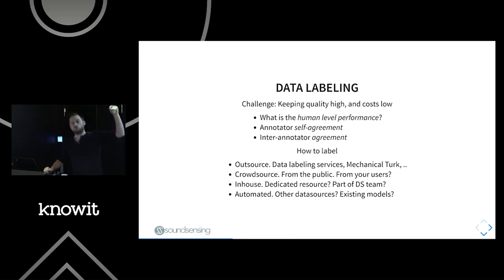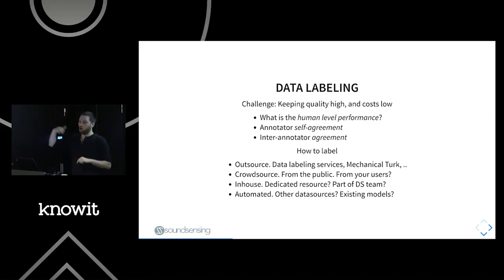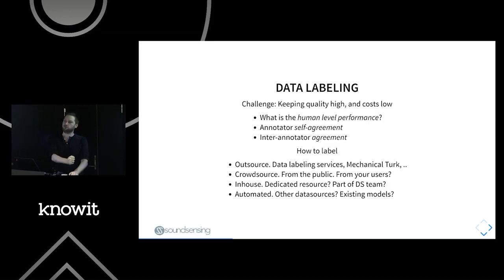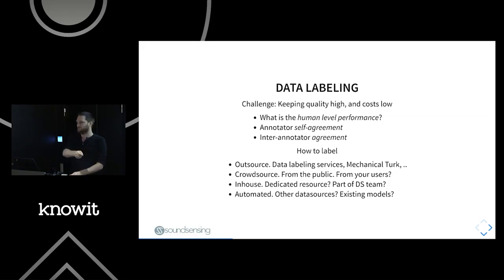Key questions in labeling: what is the human-level performance? You should not expect to exceed human-level performance — you might hope to reach it. If humans are your ground truth, you can't do better than the person telling you what's right and wrong. You should evaluate human-level performance in your labeling process to understand what kind of performance can be achieved at all. If humans can't do it, don't bet your business that you can.